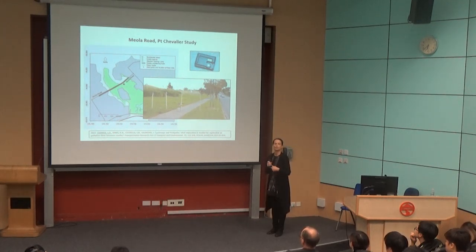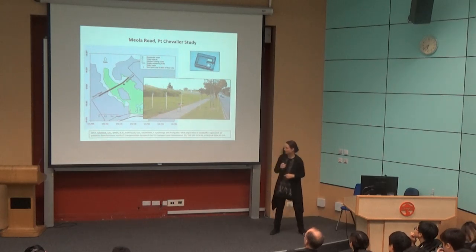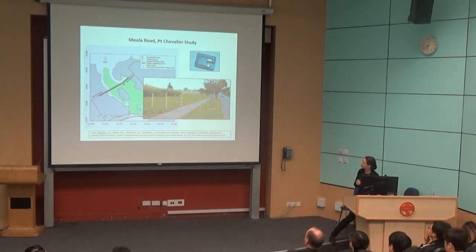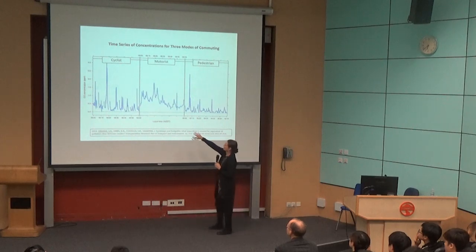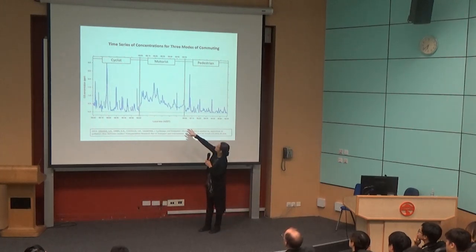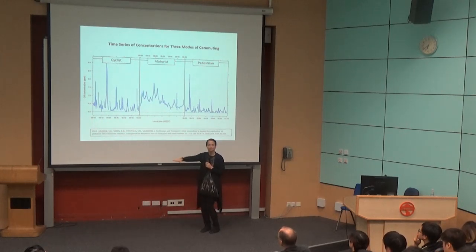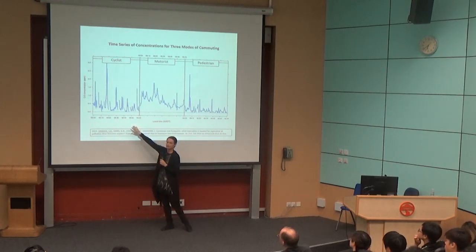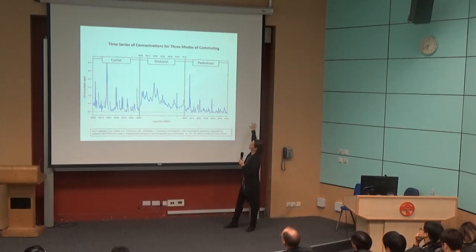The cyclist did three times as many there-and-backs as the walker. We compared the air pollution concentrations for those three commuters. This is an example of the time series — the motorist, cyclist, and pedestrian. As expected, air pollution concentrations for the person going by car are the highest, down the middle of the road. Slightly lower for the cyclist off to the side, and lower again for the pedestrian, even further onto the footpath.